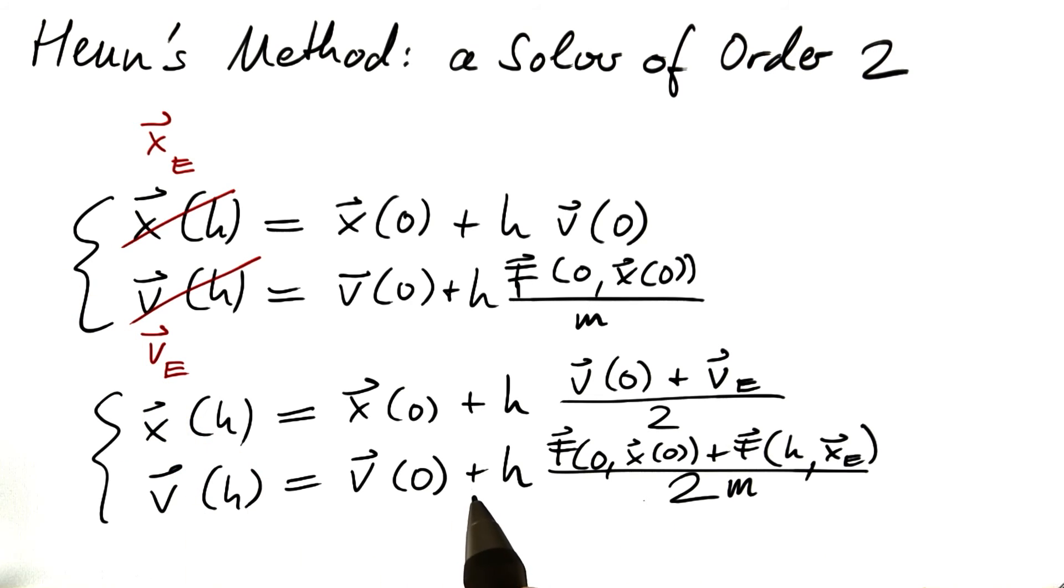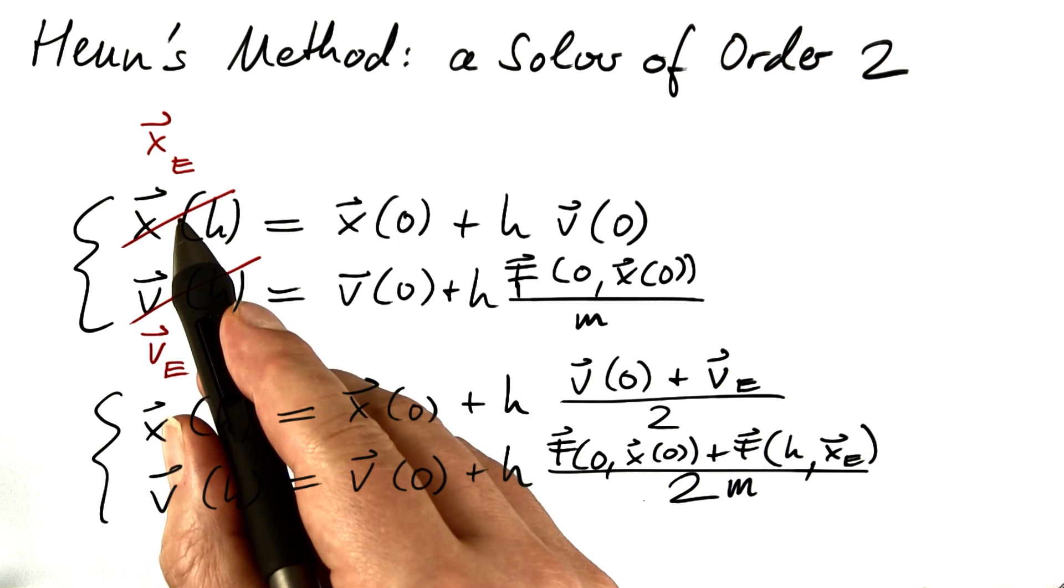For the velocities, I'm using a similar approach. I form the average of two forces and divide by m to get acceleration. The first force is the initial force, time zero, initial position. The second force is the force that I get at the end of the first time step using the position predicted by Euler's method.